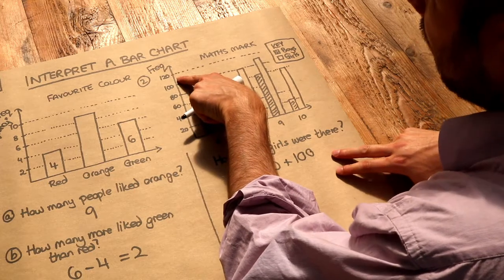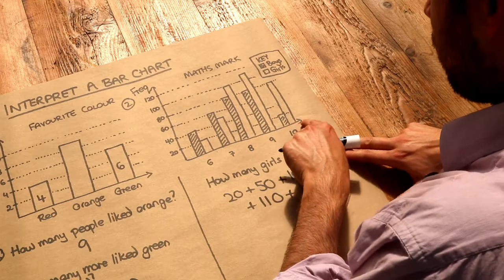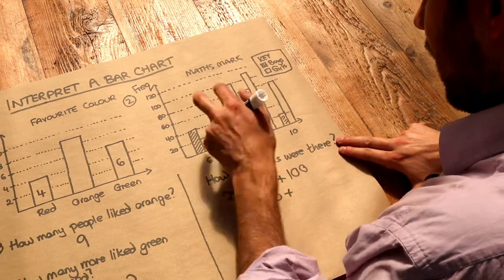That's halfway between 100 and 120, which is 110. And finally, how many girls have got 10 for marks? Go to the top of that girl bar. We can see that is 80.